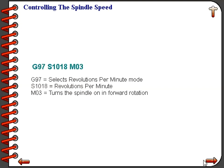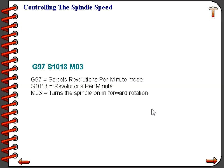Turning the spindle on in direct RPM mode is very easy. We would command G97 S1018 M03. The G97 sets the machine into revolutions per minute mode; the S1018 tells the machine to run at our calculated 1018 RPM; and the M03 turns the spindle on in forward rotation. That's all there is to turning the spindle on under the effect of direct RPM programming.